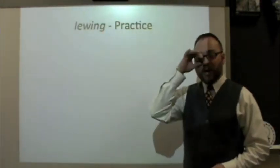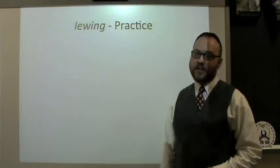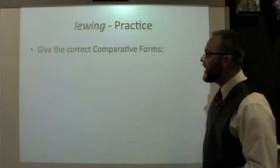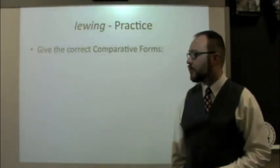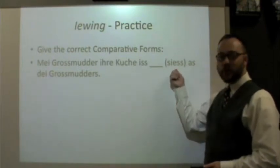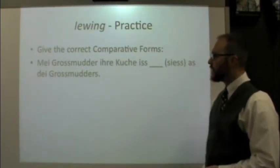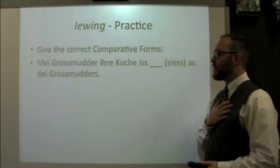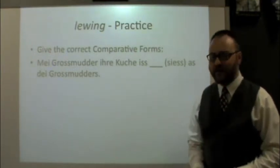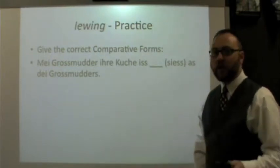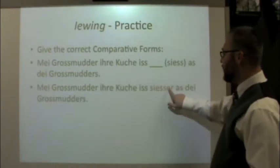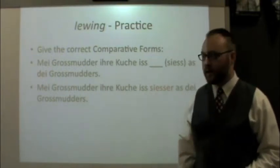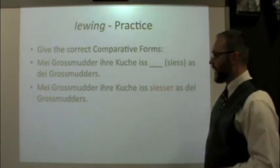It's a lot of information, and a lot of it with comparative and superlative honestly requires memorizing the forms. Let's practice a little. Give the correct comparative form. Our adjective is cease, which means sweet. The sentence is: my großmutter ihre kuche is [form of cease] as dein großmutter's — my grandmother's cake is sweeter than your grandmother's. We add -er: my großmutter ihre kuche is ceaser as dein großmutter's.